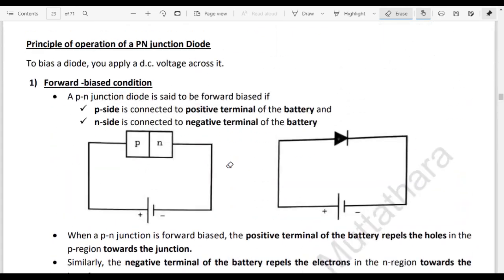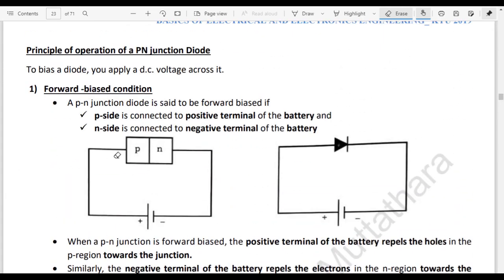Diode forward biased condition. The p side of the p-n junction diode is connected to the positive terminal of the battery and the n side of the p-n junction diode is connected to the negative terminal of the battery.